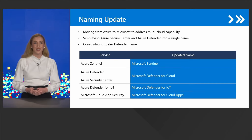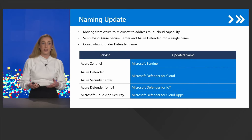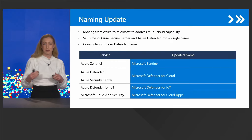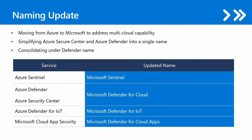I will start with the more general ones — the naming updates. The new names are not entirely new, but they are trying to stress and address the multi-cloud capabilities that have been announced. A few Azure solutions are now moving to the Microsoft naming. We have Azure Sentinel, now Microsoft Sentinel; Azure Defender and Azure Security Center, now unified into Microsoft Defender for Cloud; Azure Defender for IoT, now Microsoft Defender for IoT; and Microsoft Cloud App Security is now going to be called Microsoft Defender for Cloud Apps, following the same pattern as the other XDR solutions under Microsoft 365 Defender.